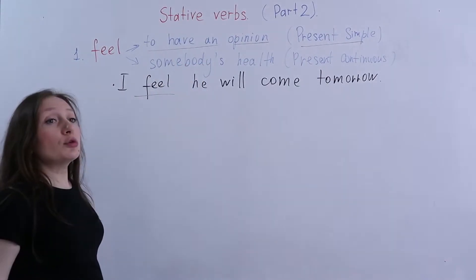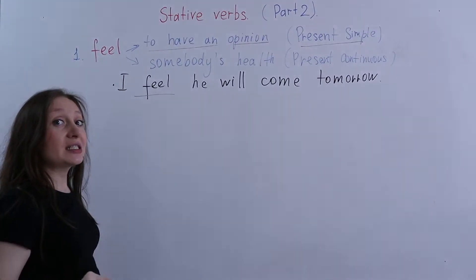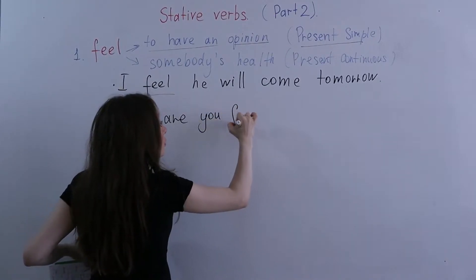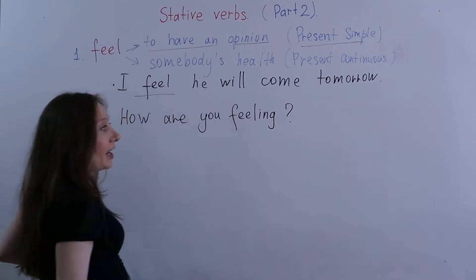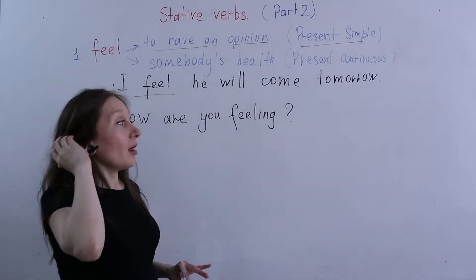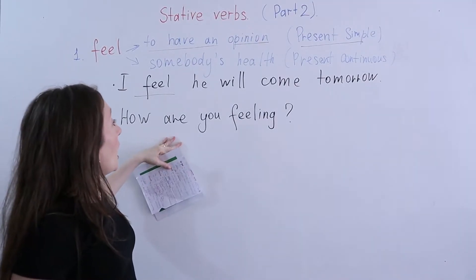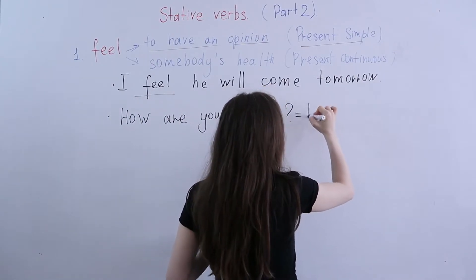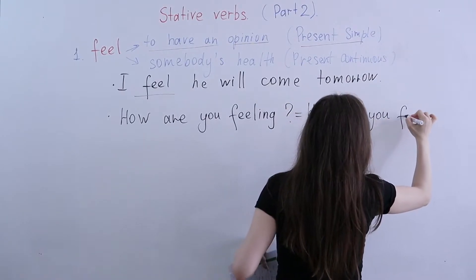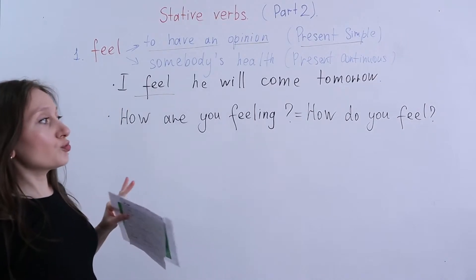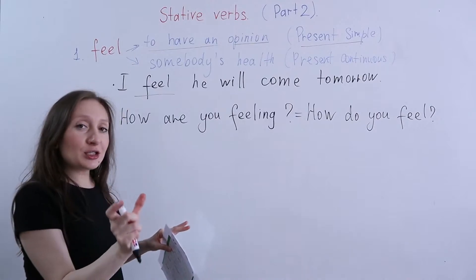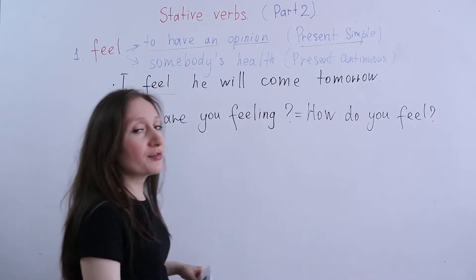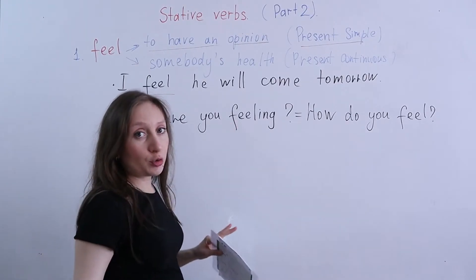When we ask about health, we can use the present continuous form. For example: 'How are you feeling?' You've heard it many times in films or read it in books — 'How are you feeling right now?' But 'How do you feel?' is also fine. Both variants are acceptable. When you say 'How are you feeling?' you underline the present moment. So if you see ING with the verb 'feel,' don't be surprised — it's an exception.